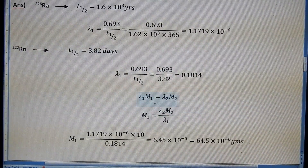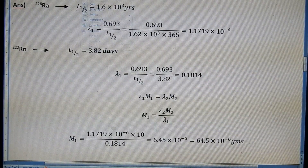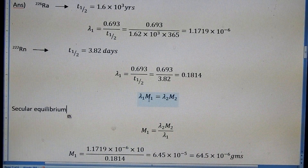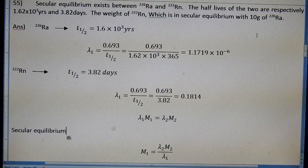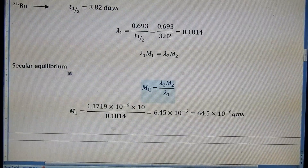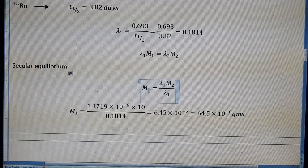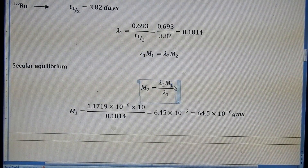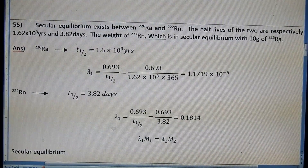For secular equilibrium, the formula is λ₁m₁ = λ₂m₂. Due to secular equilibrium, λ₁m₁ equals λ₂m₂. We can find the mass m₂ of Rn in equilibrium with 10 grams of Ra-226, where m₁ = 10 grams is already given.